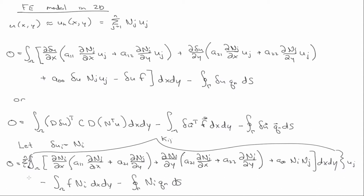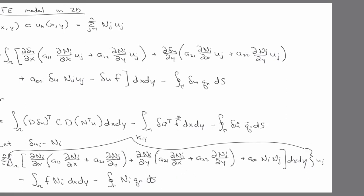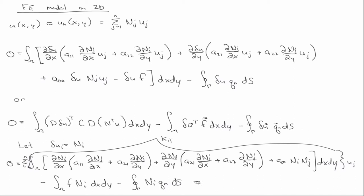And what's left will be the right-hand side. So we have k_ij u_j equal to f_i q_i.